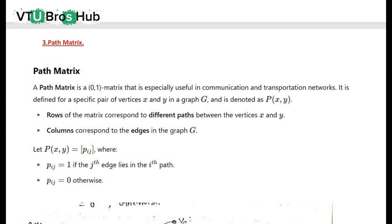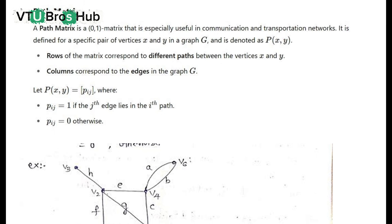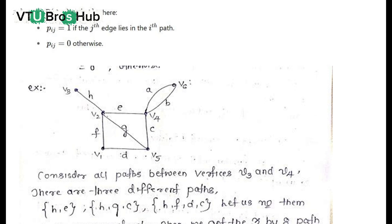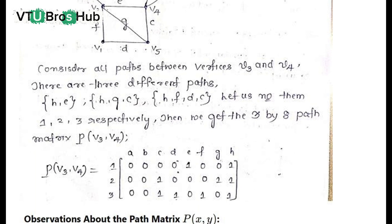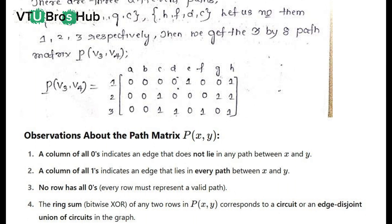Path matrix: A path matrix shows if a path exists between two vertices. The example on screen shows 1 for connected, 0 for no path. Observe the highlighted matrix now.